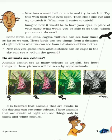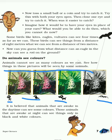Now, what about colors? Can animals see colors? Animals cannot see as many colors as we can. Humans can see all colors. Birds can see colors like us. Animals like dogs can see only a few colors. Animals that are awake at night, like rats, can see only black and white. It is believed that animals awake in the daytime can see some colors, while animals awake at night can see only in black and white.